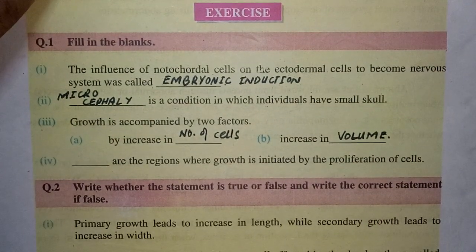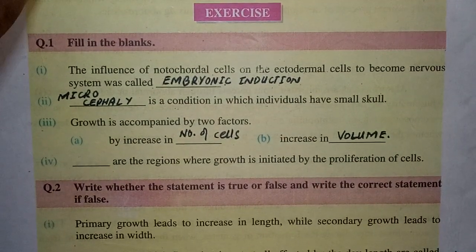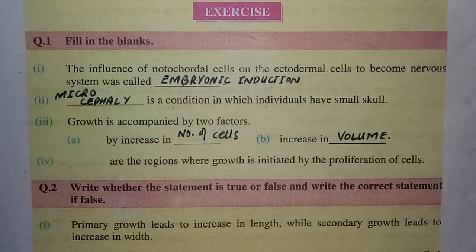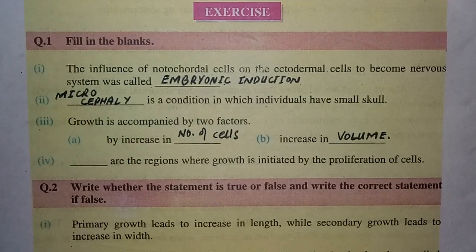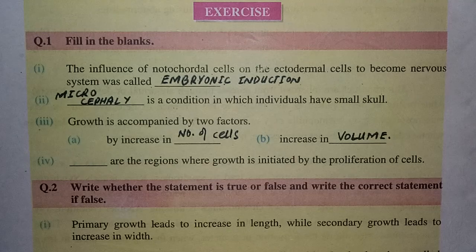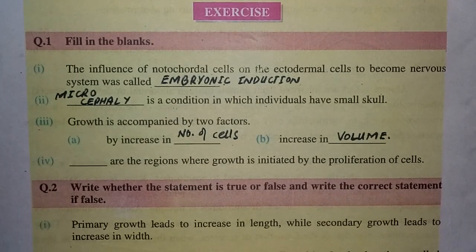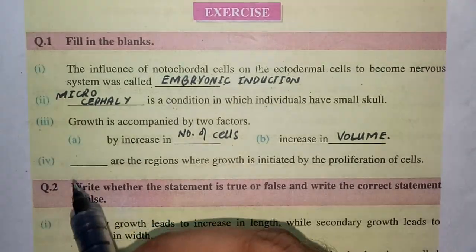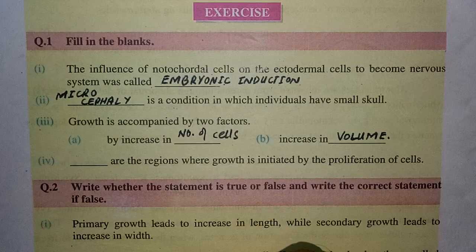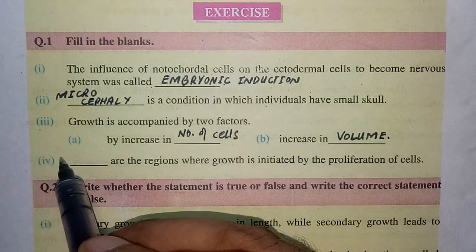So let's move toward the last filling the blank. The blank are the regions where growth is initiated by the proliferation of cells. The answer to this question is meristematic tissues, or meristems.